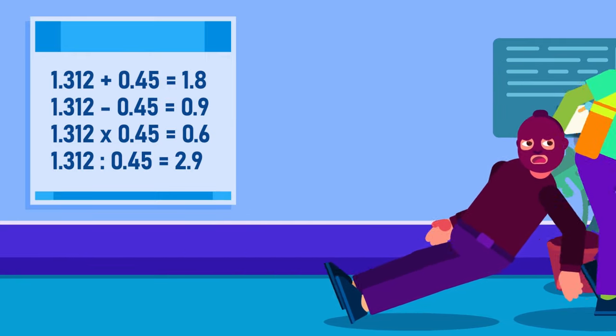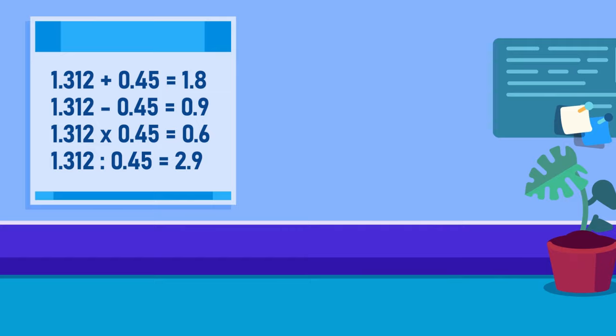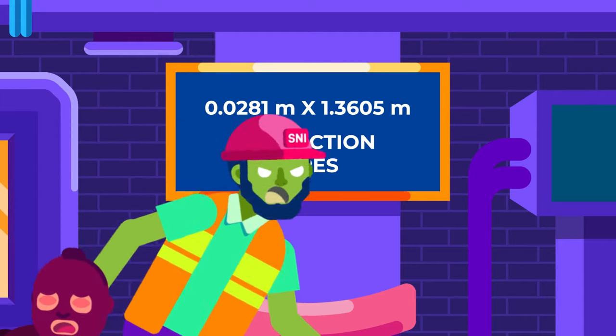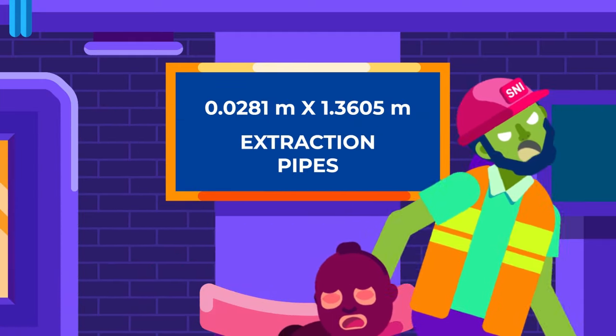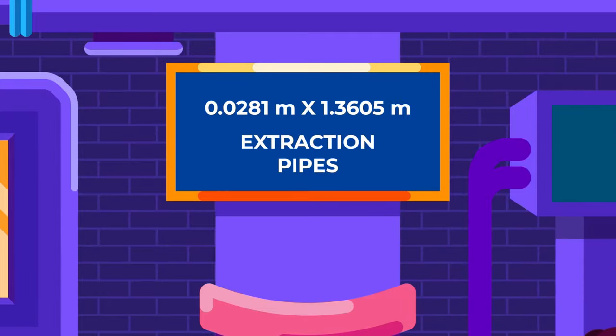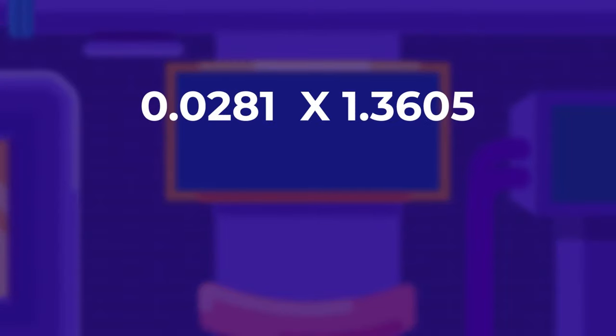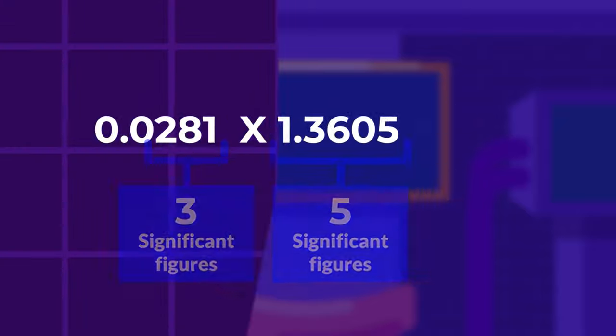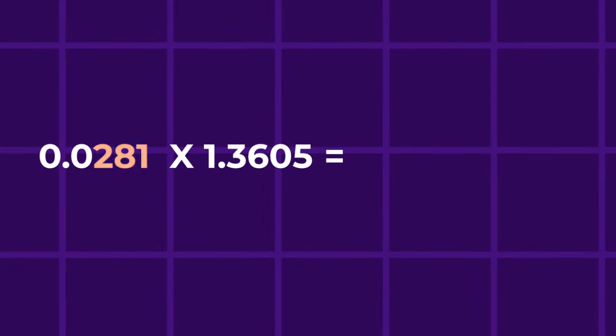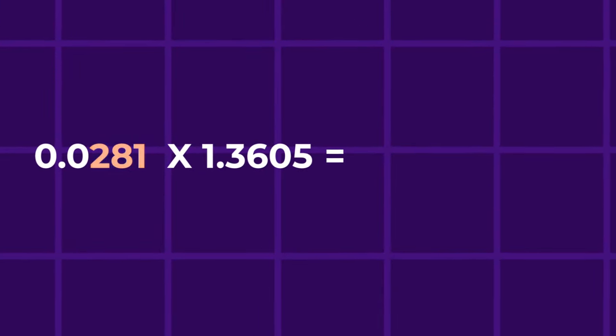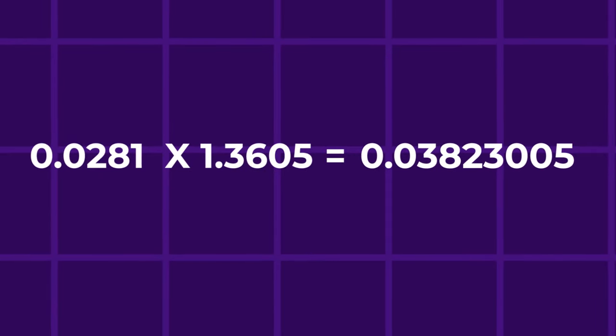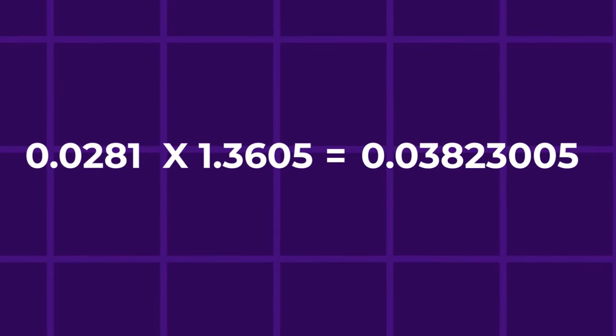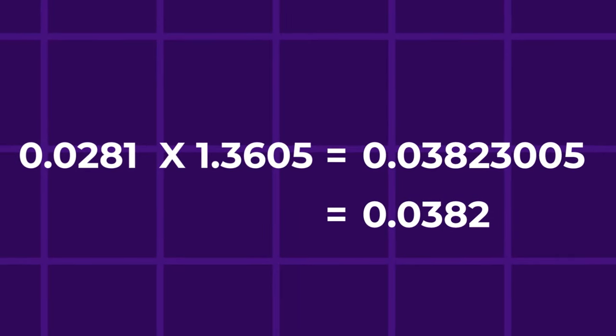The same rule applies to subtraction, as well as to multiplication and division. In a multiplication problem such as 0.0281 meters by 1.3605 meters, the significant figures are respectively 3 and 5 digits. Therefore, the answer must be rounded to the lowest number of significant figures, that is 3 digits. And the result 0.03823005 becomes 0.0382.